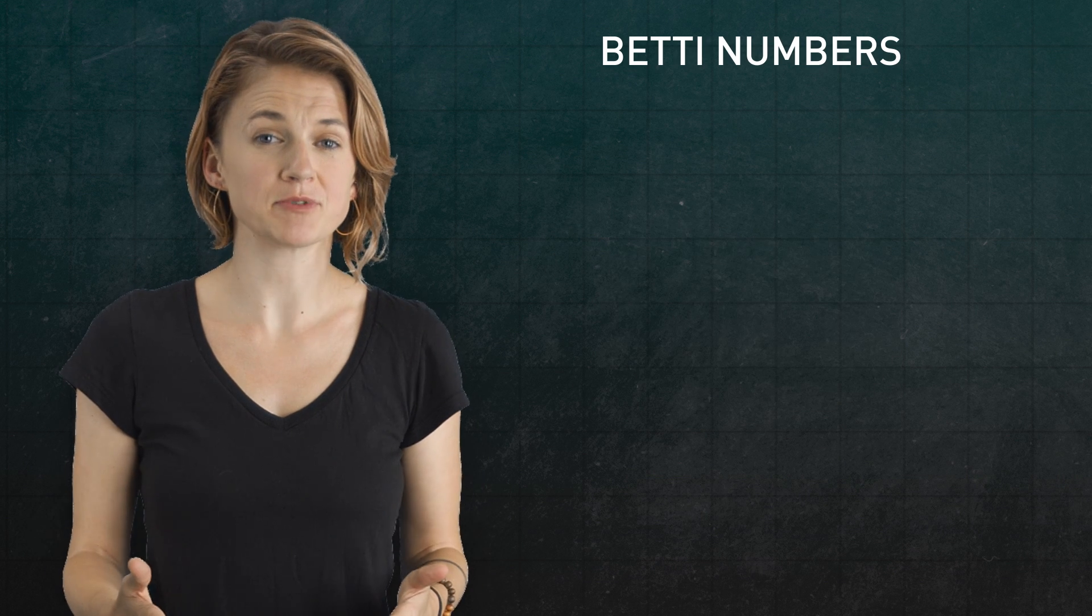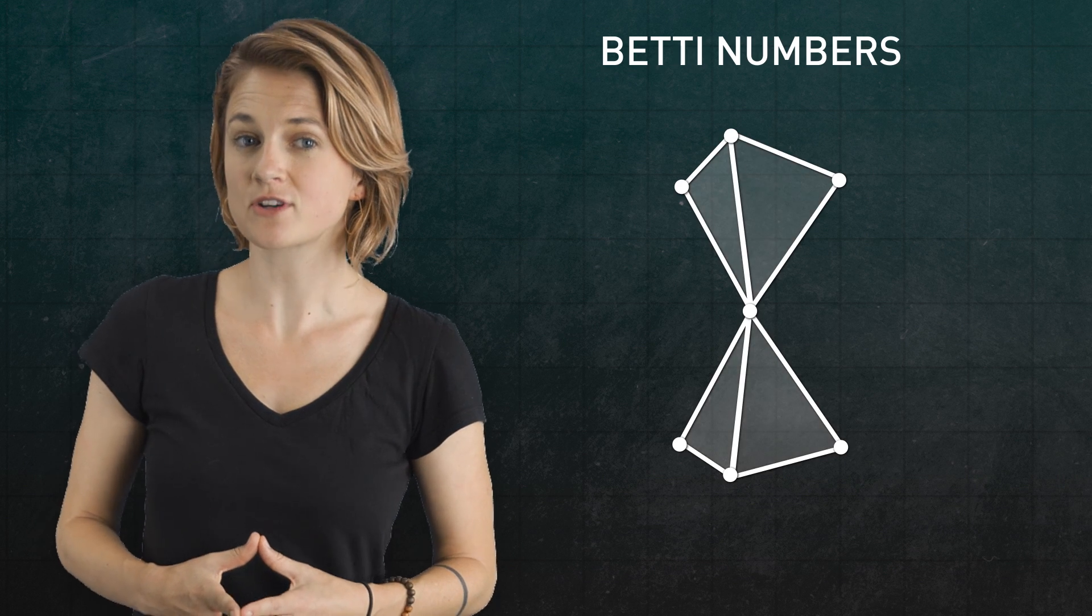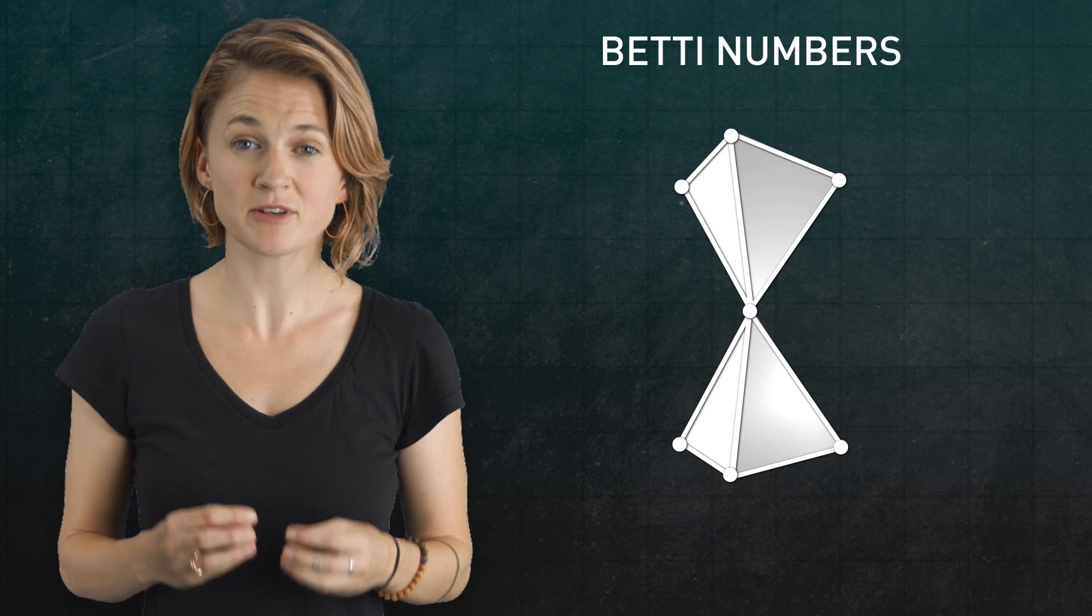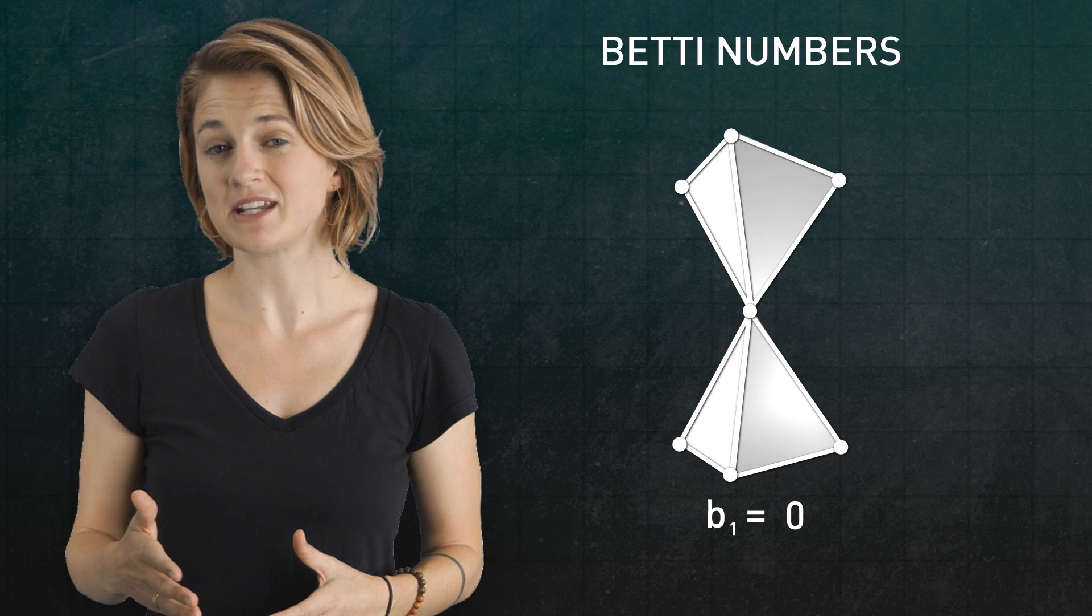Here's one more example, this time using a simplicial complex. For these two hollow tetrahedra joined at a common vertex, the first Betty number is zero and the second Betty number is two.